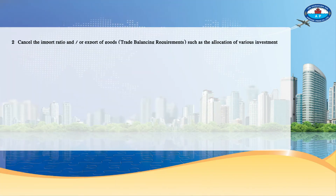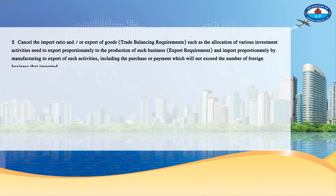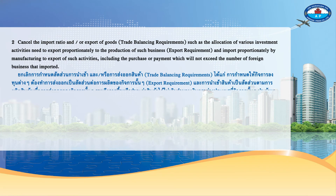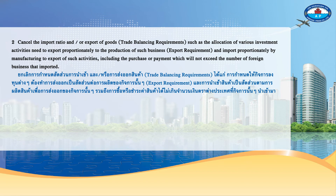2. Cancelling the import ratio and/or export of goods trade balancing requirements, such as the allocation of various investment activities needed to export proportionately for the production of such business, export requirements, and imports proportionate to manufacturing for export of such activities, including purchases or payments which will not exceed the number of foreign business imports.